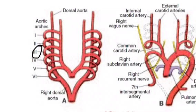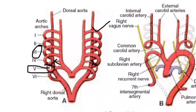Looking at the first, second, third, fourth arches — there are some important things to remember: what are the arteries that develop from the aortic arches? The fifth aortic arch degenerates. The first aortic arch results in the formation of the maxillary artery.